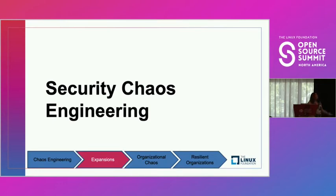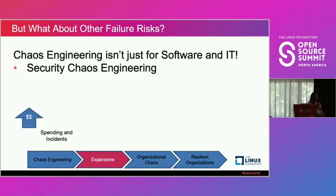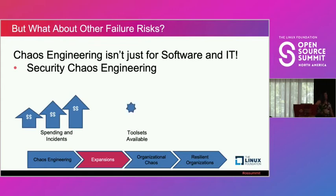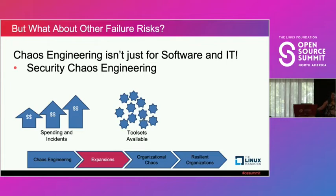There were still two other risks. Security chaos engineering is the strategy they'll use for risk number three. Chaos engineering isn't just for software and IT — security chaos engineering is one area where it's particularly good.